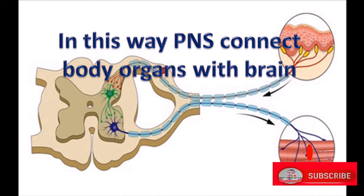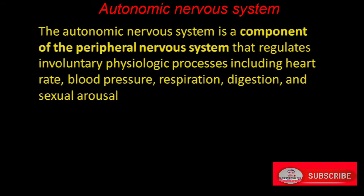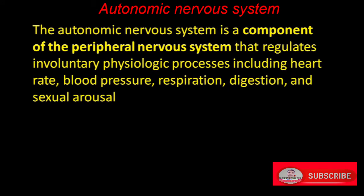In this way the pathway formed is called the reflex arc. The peripheral nervous system connects body organs with the brain and helps in stimulation and reaction. The autonomic nervous system is a component of the peripheral nervous system that regulates involuntary physiologic processes, including heart rate, blood pressure, respiration, digestion, and sexual arousal. These are automatic responses controlled by the nervous system.